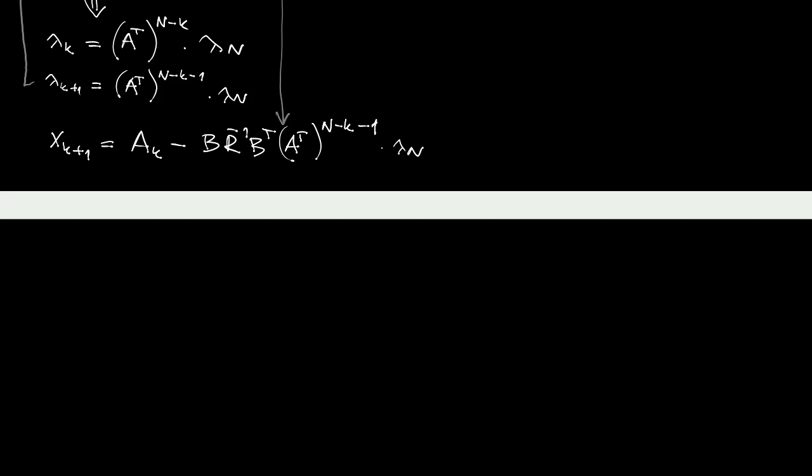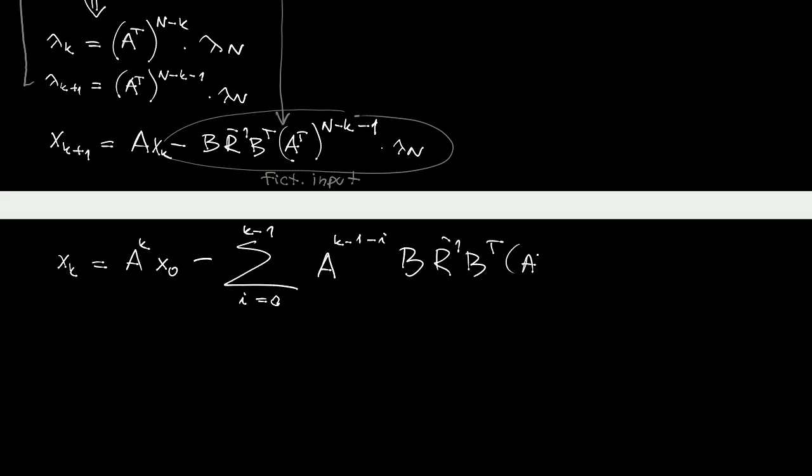Now, I can regard this whole term as a fictitious input, and we know how to find the response of a state-space model, right? So the response then contains the response to the initial state x_0, and then the term that corresponds to the convolution with the external input, our fictitious input up there.